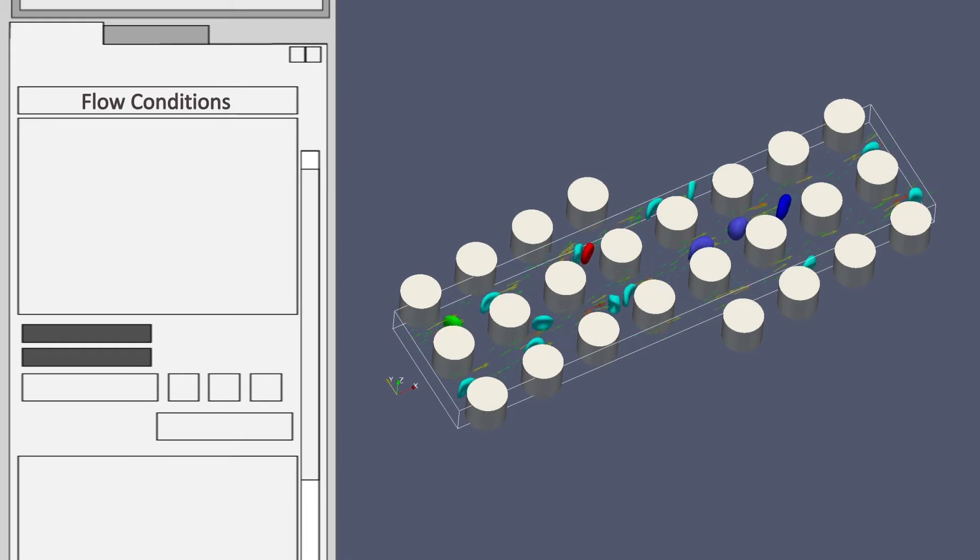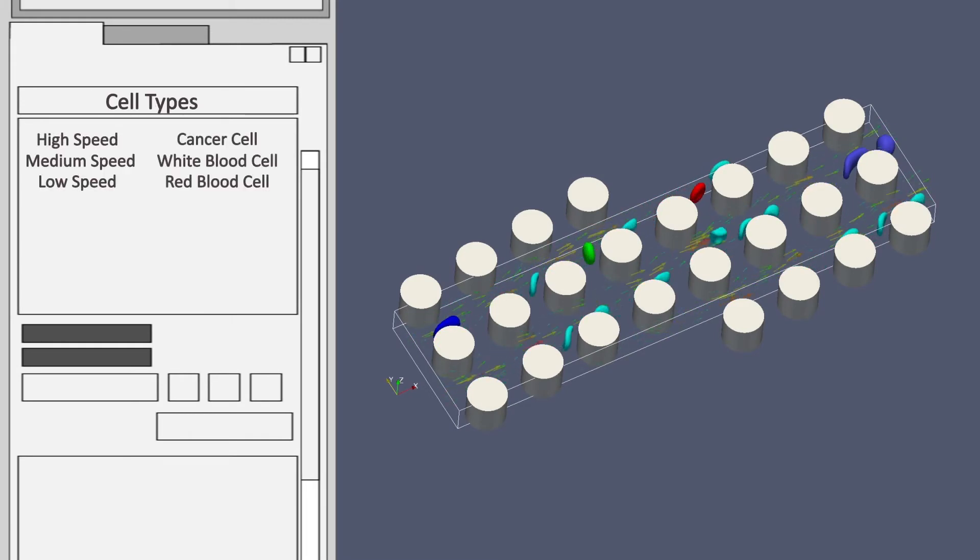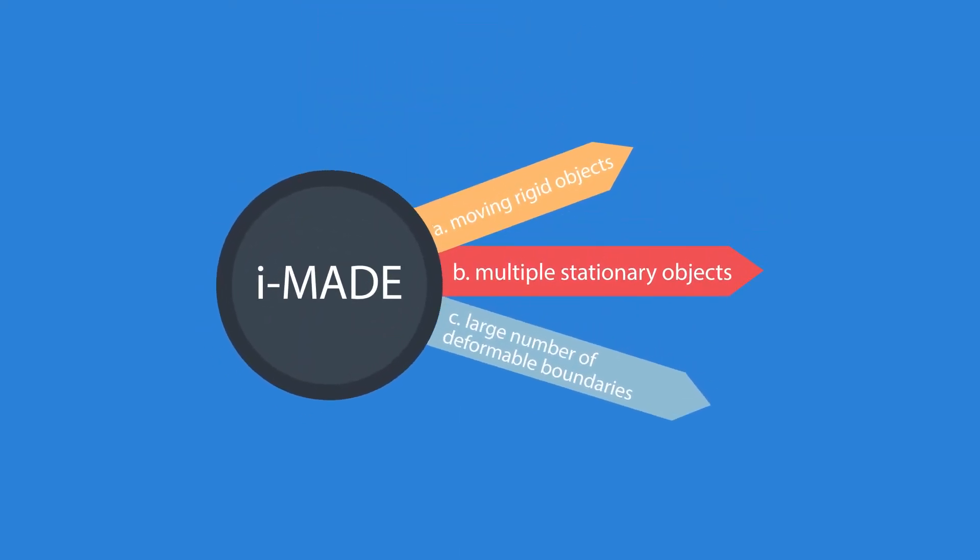The graphic user interface allows users to input different flow conditions within the micro-channel and input cell types with different properties. This allows the software to handle a large number of deformable boundaries, multiple stationary, and moving rigid objects.